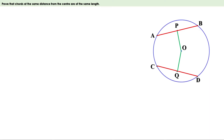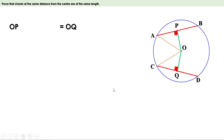Since the distance from the center to the chords are equal, OP and OQ are equal. Now join OA and OC. Look at these two triangles. OP and OQ are perpendicular to the chords, therefore these two are right-angle triangles. Since the distance from center to the chords are equal, OP equals OQ. OA and OC are radii of the circle, therefore they are also equal.